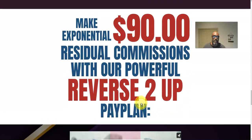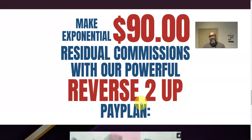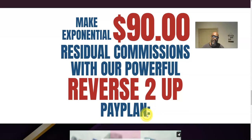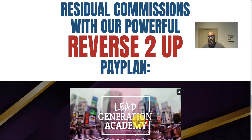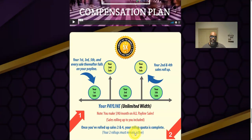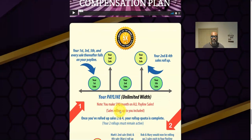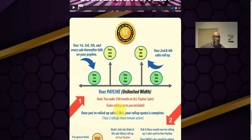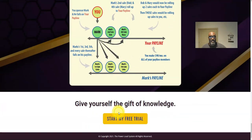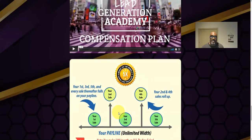Let me show you the compensation plan real quick. You can make exponential 90-dollar residual commissions with a powerful reverse passup plan. Your first sale gets you $90 a month; your second sale you pass up to your sponsor; your third sale comes back to you. Basically, if you get four people, you'll be on the right path.